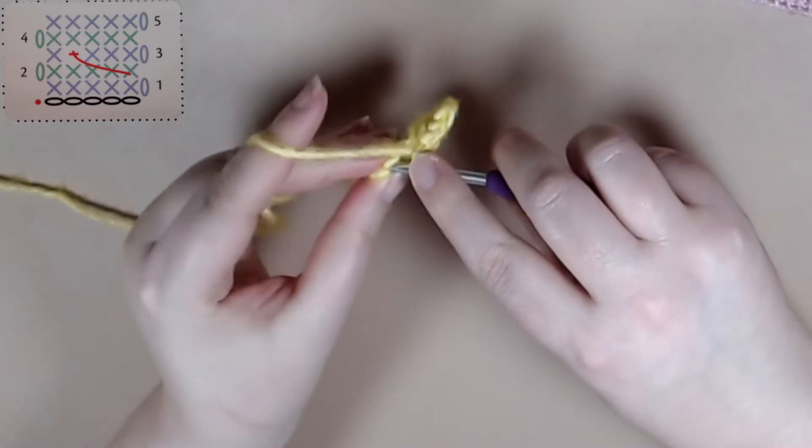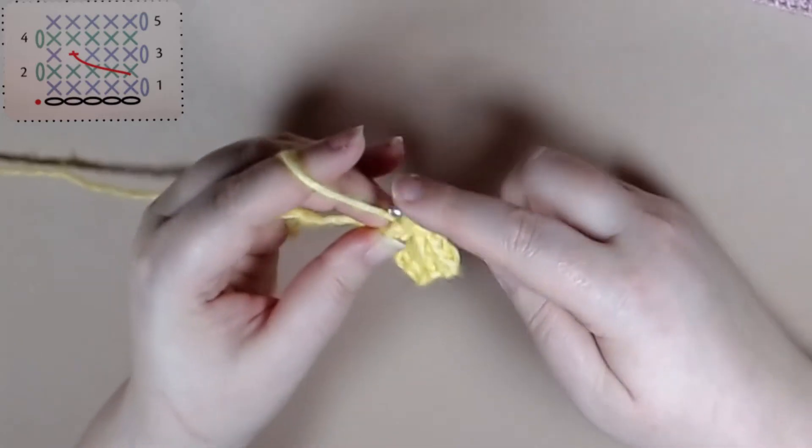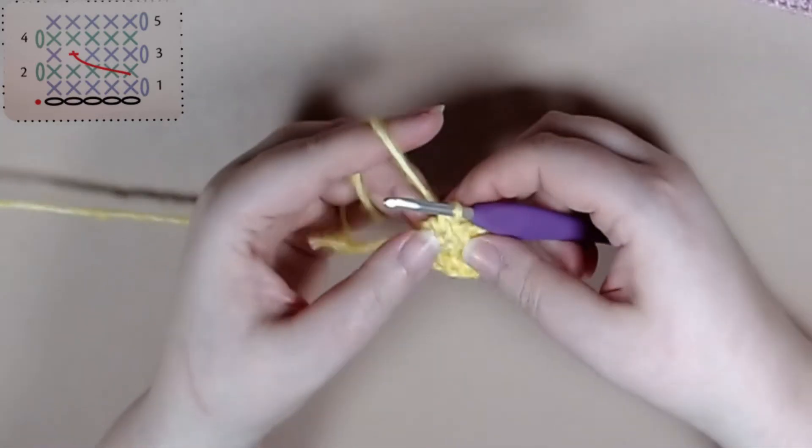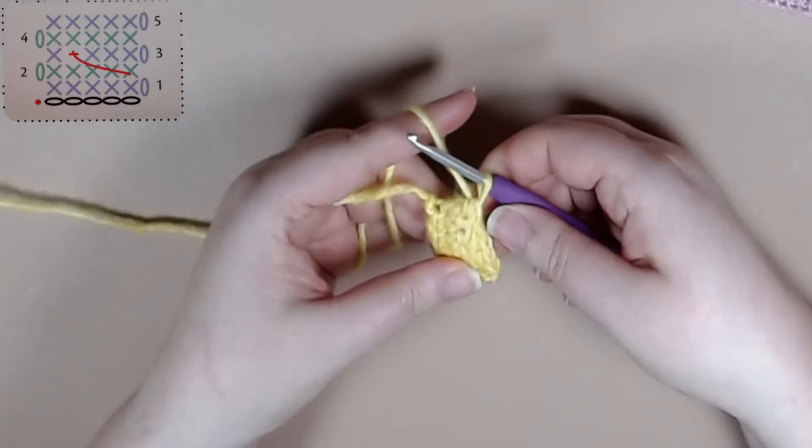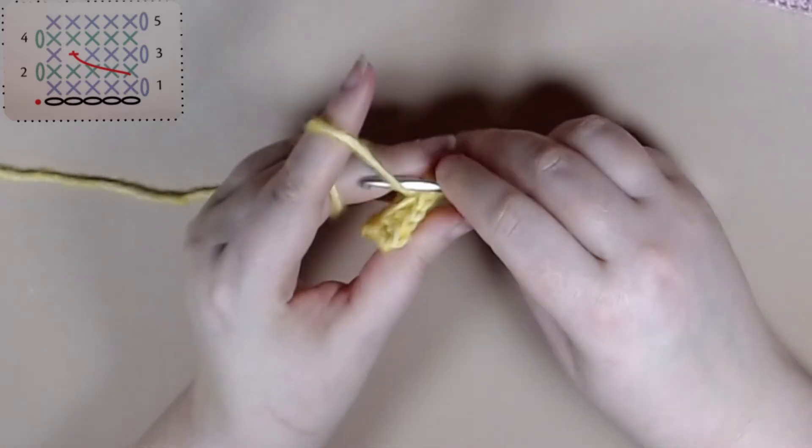And the key to this is you want to make sure that you don't pull it too tight. And then we'll follow off by doing a single crochet, not in the stitch. It's more like you skip a stitch.